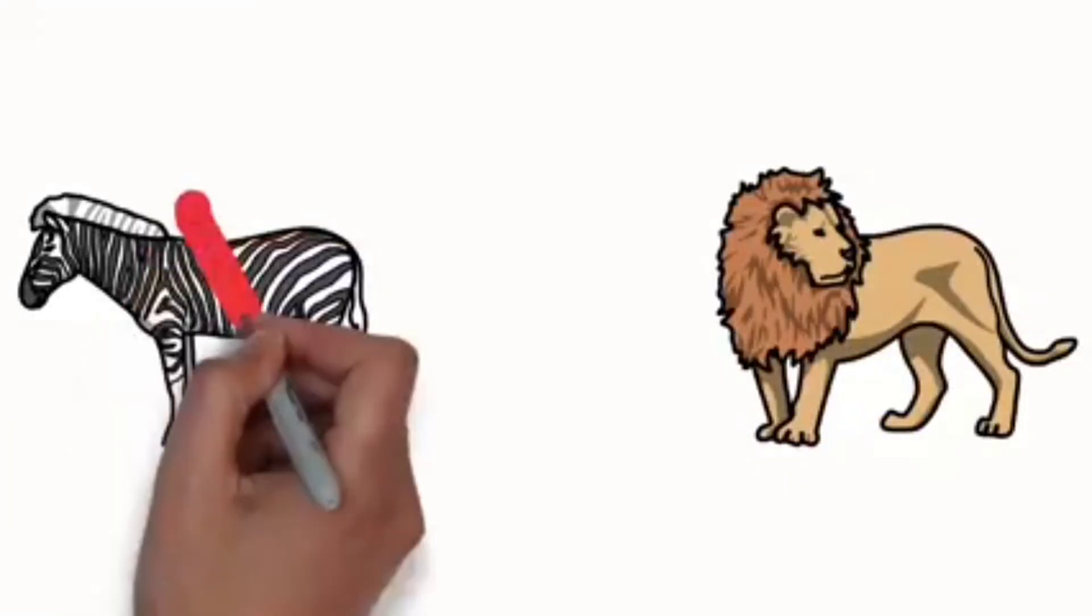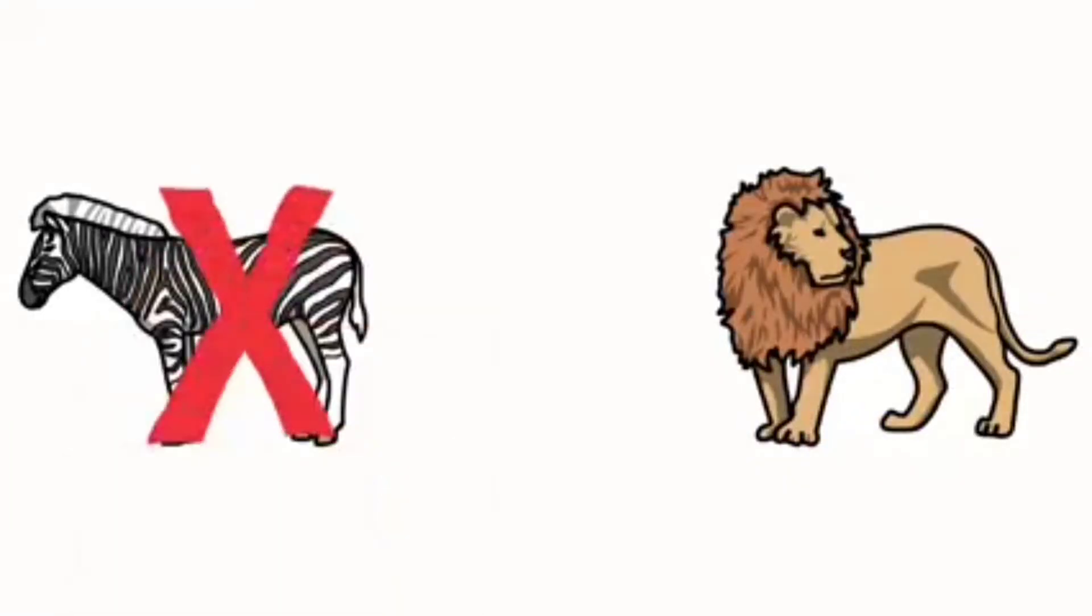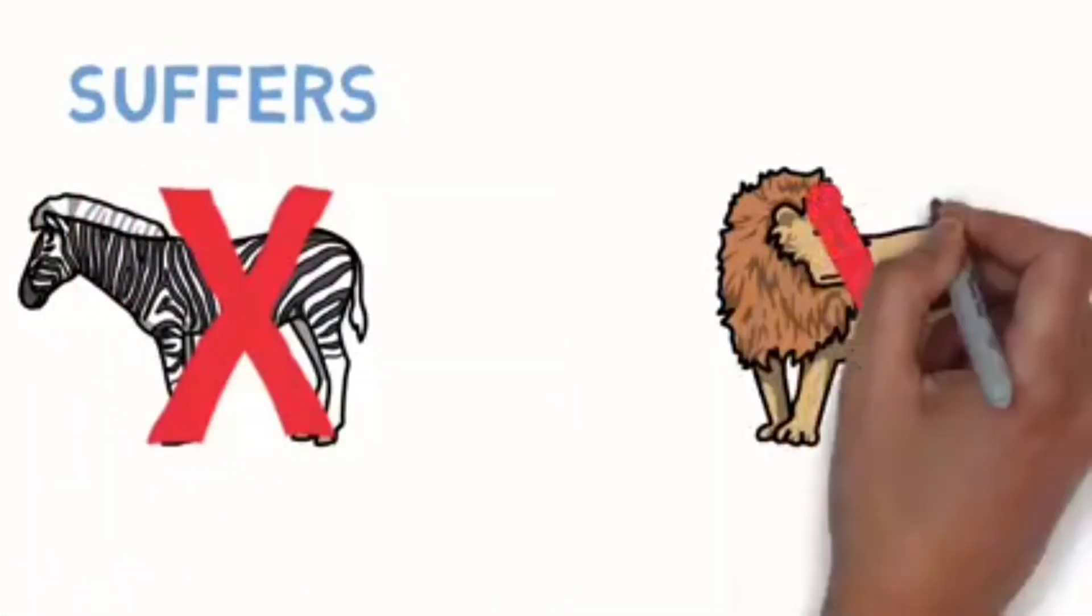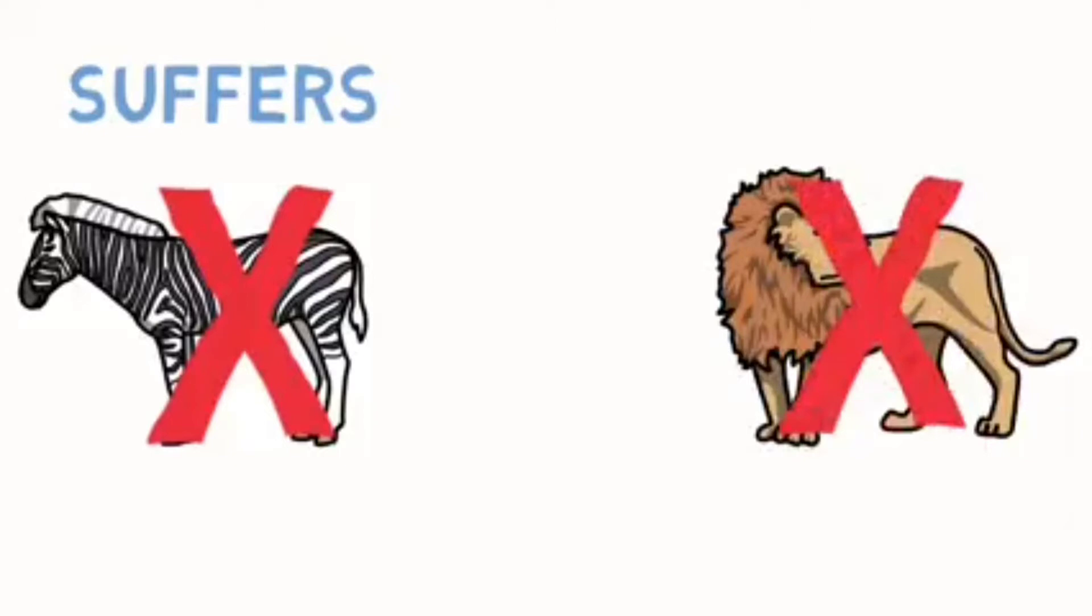Either the lion catches the zebra, in which case the zebra suffers and dies. Or the zebra escapes, in which case the lion starves and dies. Either way, one or the other suffers.